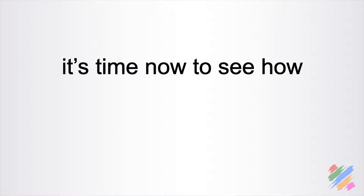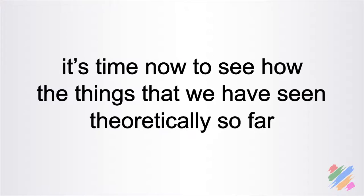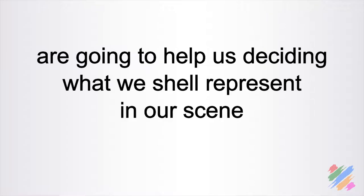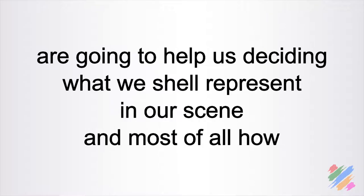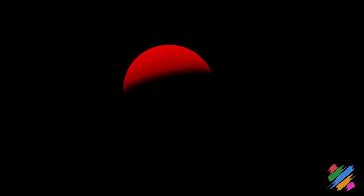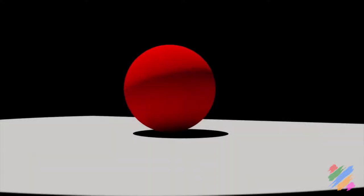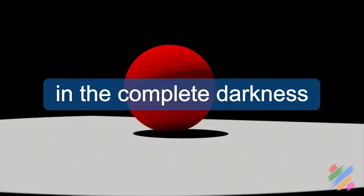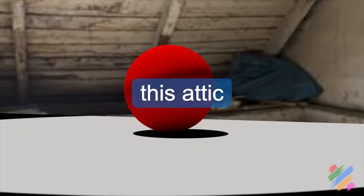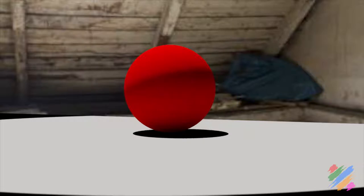It's time now to see how the things we have seen theoretically so far are going to help us decide what we shall represent in our scene and most of all how. To start, let's get back to our sphere. As we did before, we are going to set it on a flat and matte gray surface. Now, instead of setting our scene in complete darkness, we place it in a real environment — like for example this attic — and things start to change.